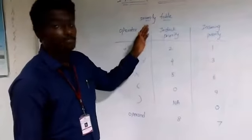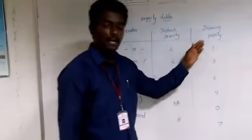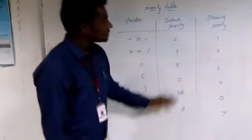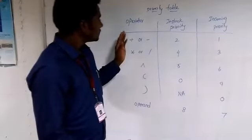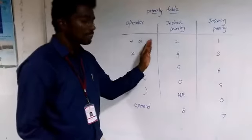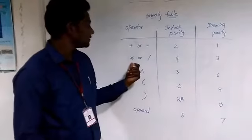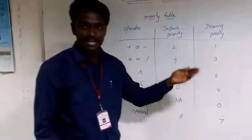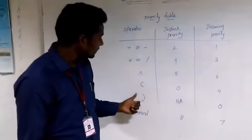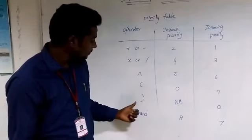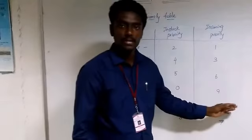Here is our priority table. So here we have operators in stack priority and incoming priority. So we are going to deal with incoming priority of operator in stack. So plus and minus always has high priority and next to it, it will be star and slash, multiplication and division sign. So here we have operators like open bracket, closed bracket, exponential, operand. So it has different priorities.